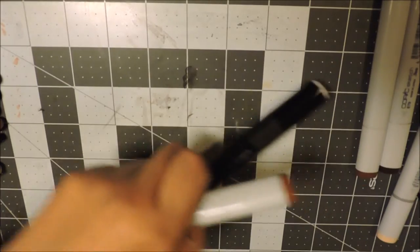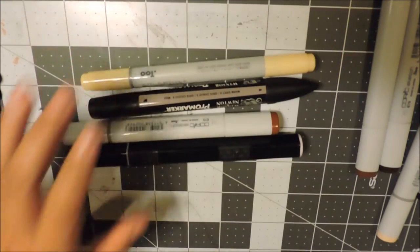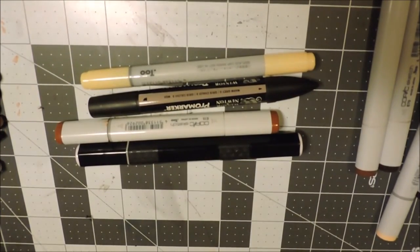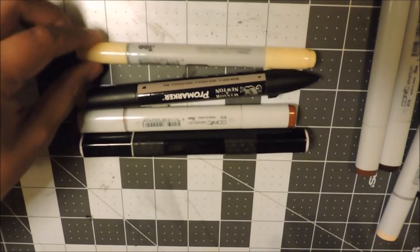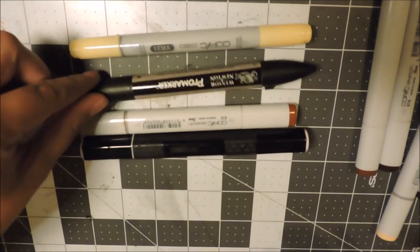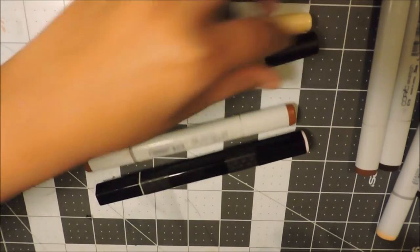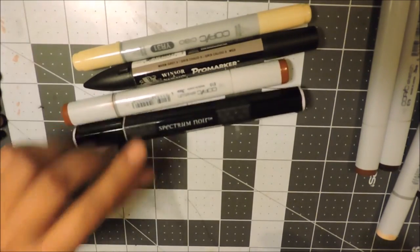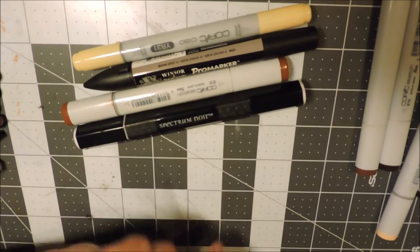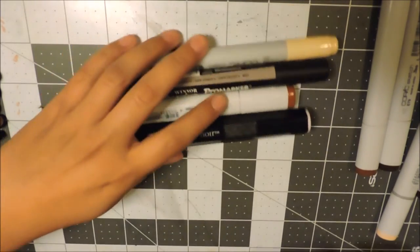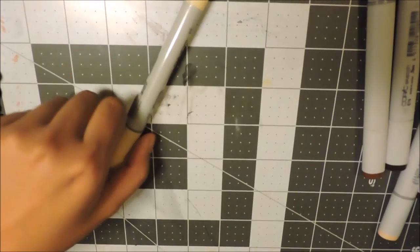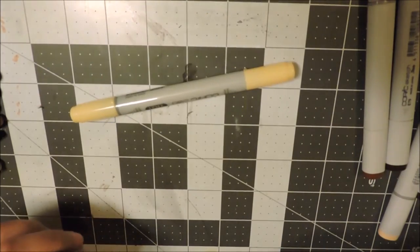Alright, so in my latte bag I have four different types of markers: I have the Copic Ciao, the Windsor & Newton Pro markers, Copic Sketch, and the Spectrum Noir markers.